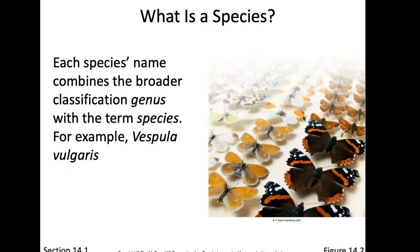Each species is given a name that combines a broad classification — the genus — so there are lots within that group that kind of look alike, and then the more specific species name, which determines just one organism. For example, the yellow jacket that comes to your picnic table is Vespula vulgaris. Vespula is the group of wasps, and vulgaris is one particular yellow jacket.